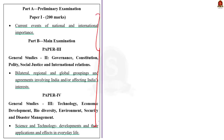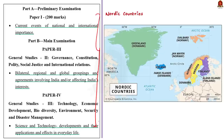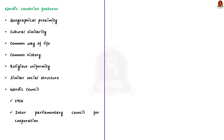First, let us understand the Nordic region and its countries. The Nordic countries include the sovereign states of Denmark, Finland, Iceland, Norway, and Sweden. It also includes two autonomous territories of Faroe Islands and Greenland, one autonomous region of Åland Islands, and two unincorporated regions of Jan Mayen and Svalbard. Greenland and Faroe Islands belong to Denmark, Åland Islands belong to Finland, and Svalbard and Jan Mayen belong to Norway.